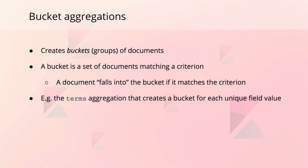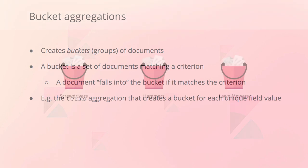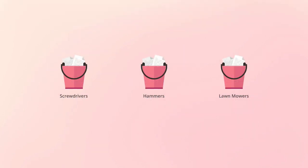If we were to use this aggregation on the product.category field for the orders dataset, we would end up with the following buckets, one for each category. Each bucket would then contain the orders for products with that category — in other words, the documents that satisfy the criterion. Along with the actual documents, each bucket also includes the number of documents that match the criterion.